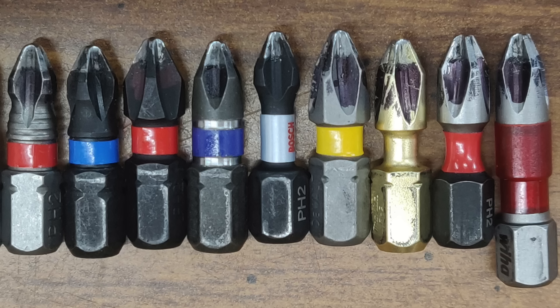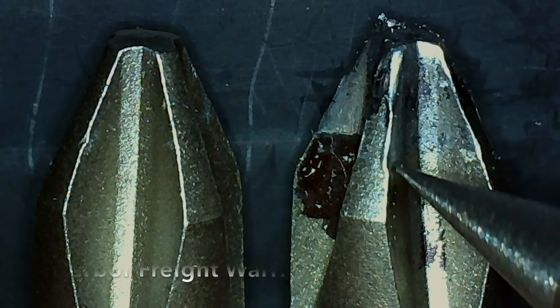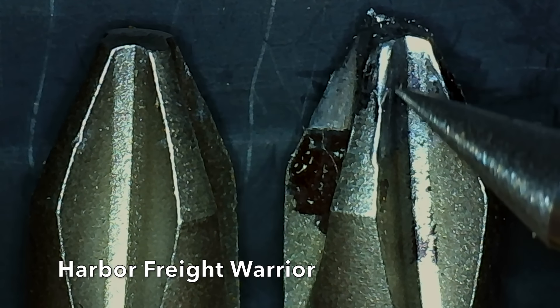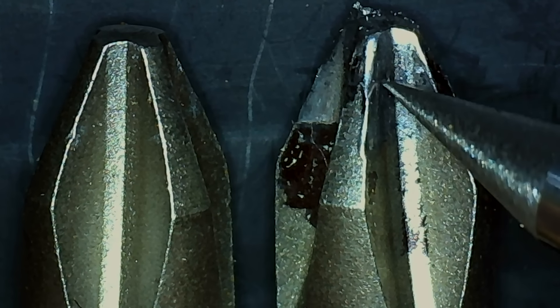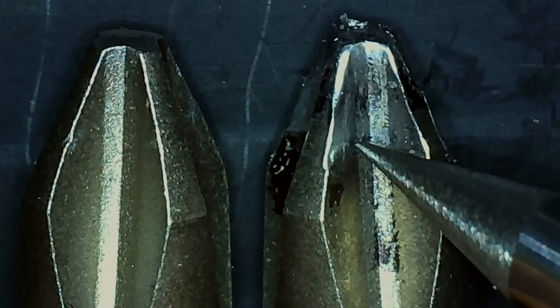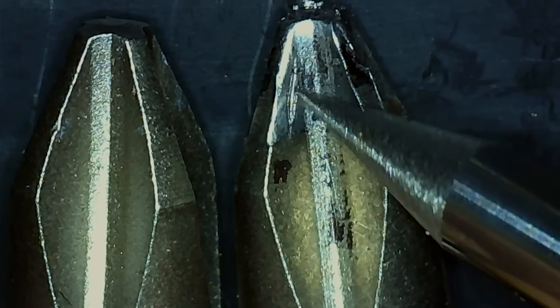Let's take a look at all the driver bits to see how much wear took place. The New Harbor Freight Warrior is on the left and the one that's been used for 100 screws is on the right. The part of the driver bit that experiences direct impact shows quite a bit of wear and some of the metal along the edge of the bit is elevated.